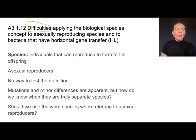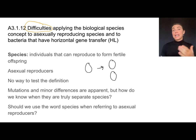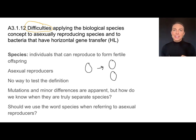One of the difficulties is what do we do about asexual reproducers? Things like bacteria or other organisms that simply make a copy of themselves without a partner — how do we test the definition of same species? For a horse and a zebra I can see that they can make an offspring but that offspring is not fertile, so I know they are not the same species. But I can't do that with bacteria or other asexual reproducers.